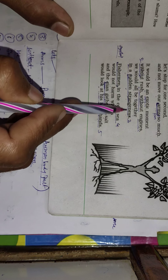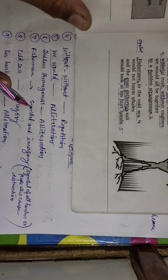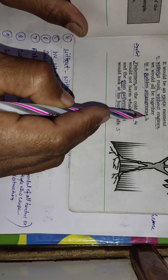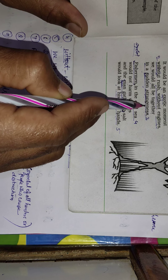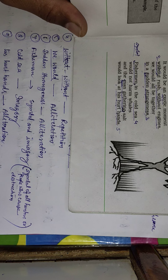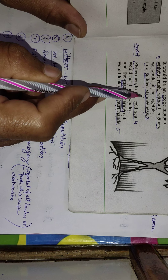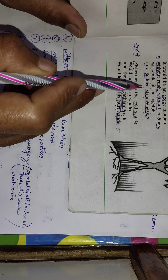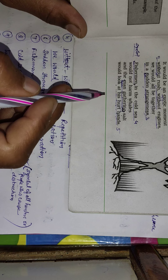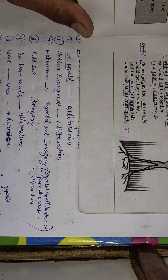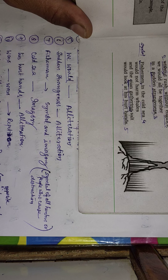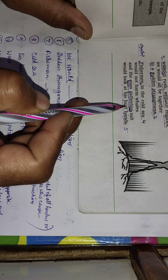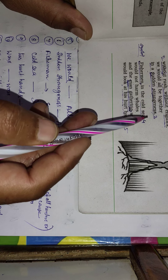In 'sudden strangeness,' the consonant sound S has been repeated twice, so it is also alliteration. Dear students, learn these figures of speech by heart because it is very important from the exam point of view. You are definitely going to be asked one question regarding the figure of speech employed in the given stanza, as per the CBSE mark distribution.